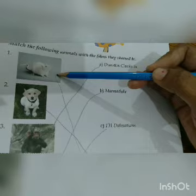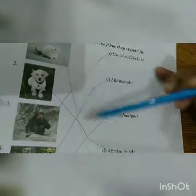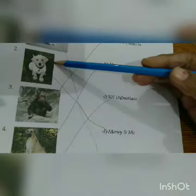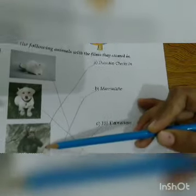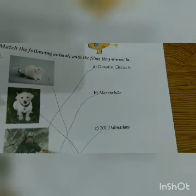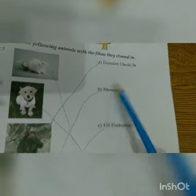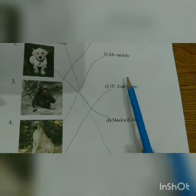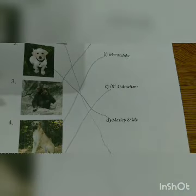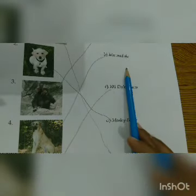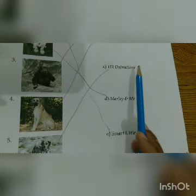Like this: first match with Stuart Little, second match with Marley and Me, third with Dunstan Checks In, fourth with Marmaduke, and fifth with 101 Dalmatians.